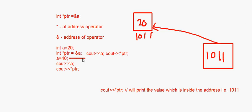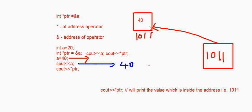Now when we write a = 40, the value inside a changes from 20 to 40. After that, 'cout << a' prints 40. And 'cout << *ptr' also prints 40, because ptr still holds the address of a (1011), and the value at that address is now 40. The pointer automatically reflects the updated value.